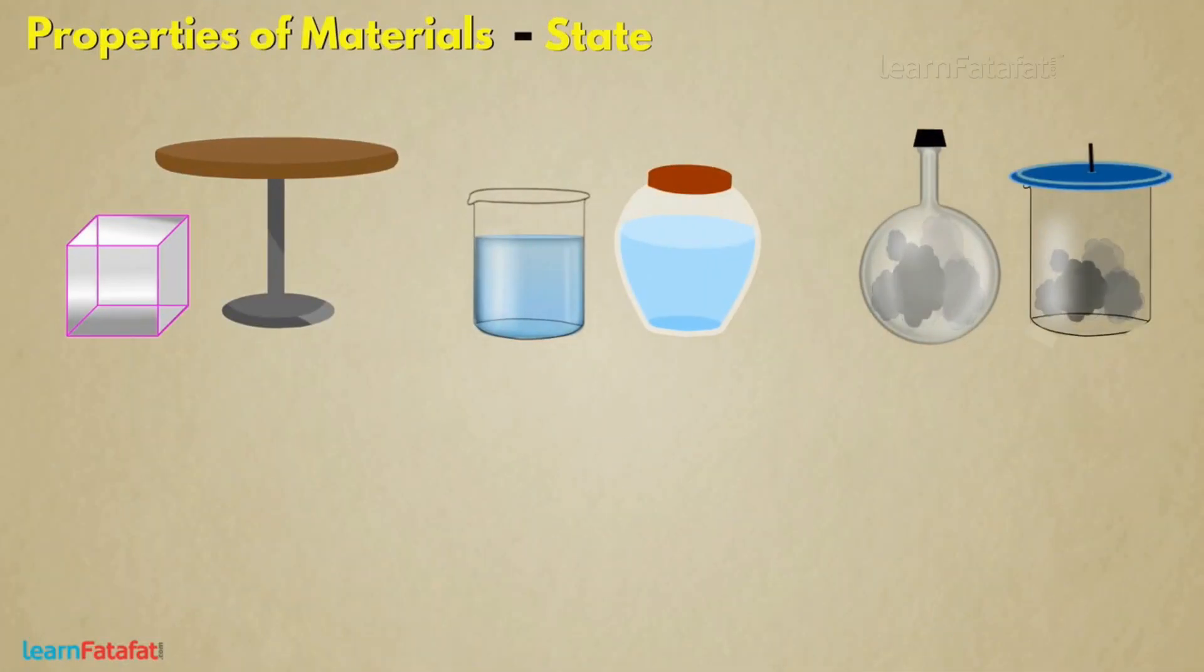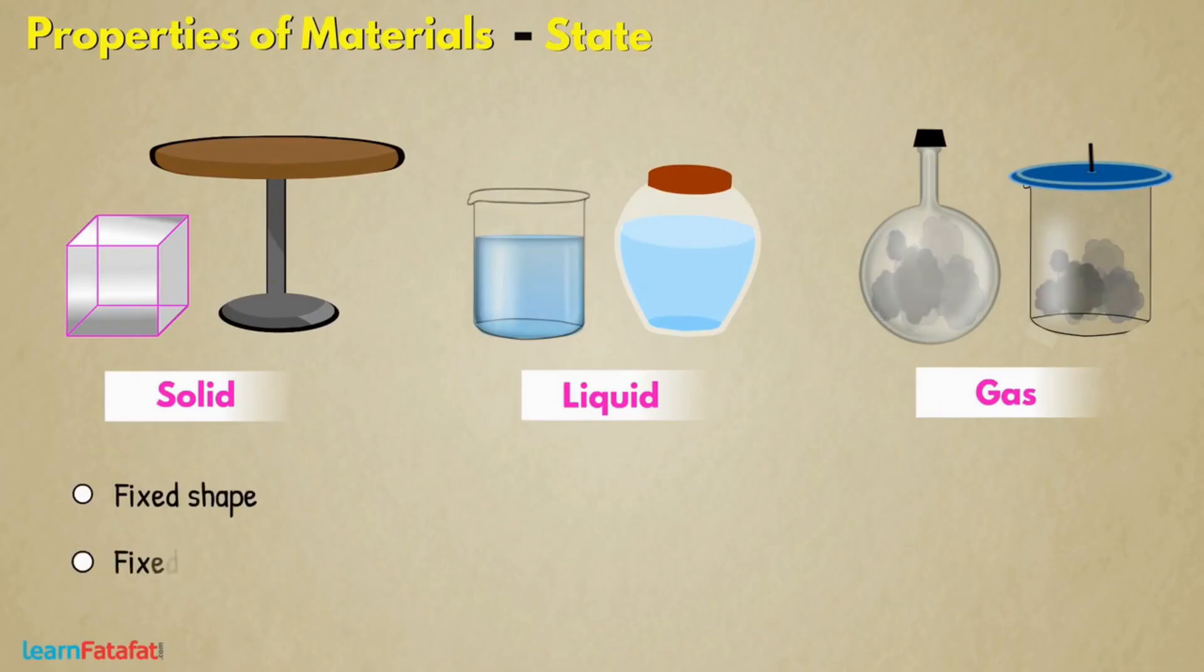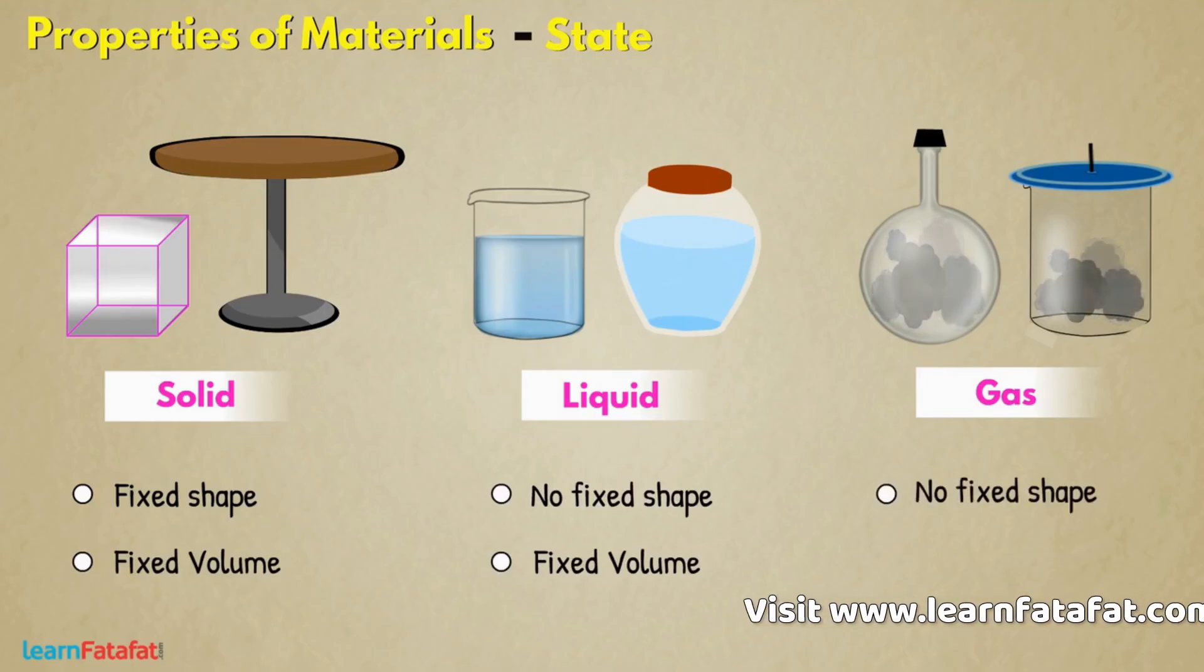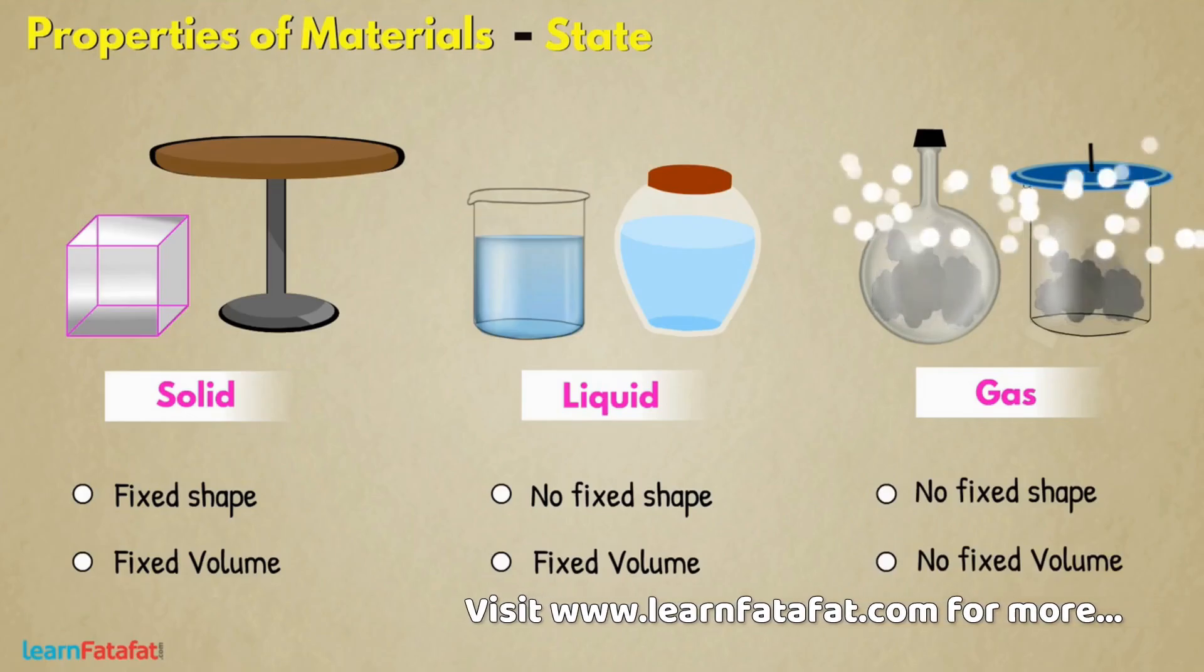State: Basically, materials exist in three states: solid, liquid, and gas. Those which have fixed shape and volume are solids. Those which have fixed volume but do not have fixed shape are liquids. And those which neither have fixed shape nor fixed volume are gases.